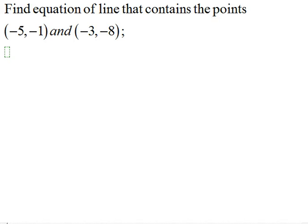To find the equation of the line that contains the points (-5, -1) and (-3, -8), use the formula y = mx + b. In other words, the equation I'm going to be creating is going to have this form, y = mx + b.